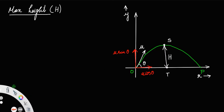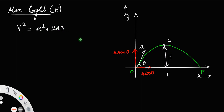You have to take the third kinematic equation of motion. The third kinematic equation is v² = u² + 2as, where v is the final velocity, u is the initial velocity, a means acceleration, and s is the distance or displacement. Since we are considering only a straight line, both the distance and displacement remain the same.